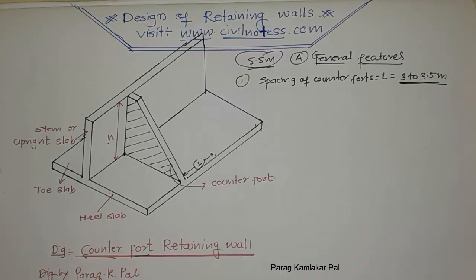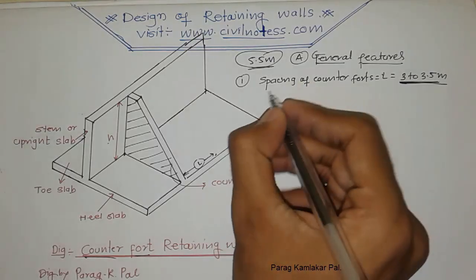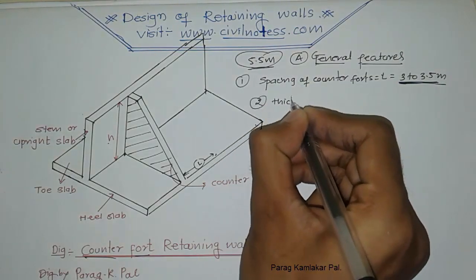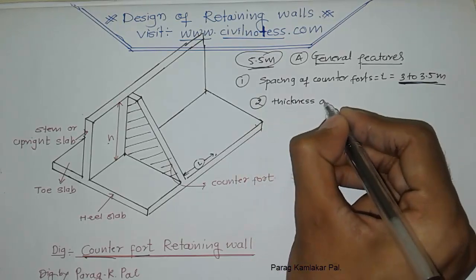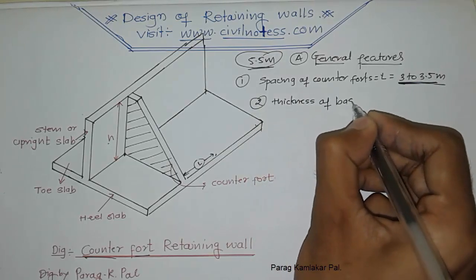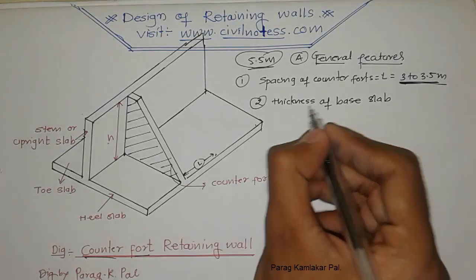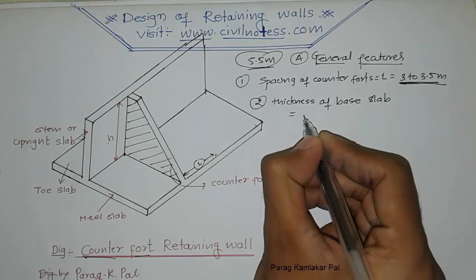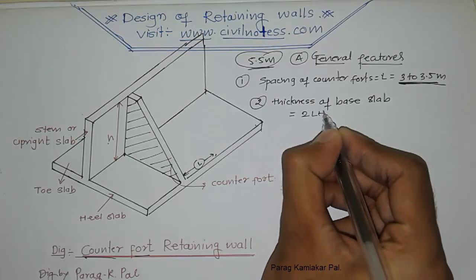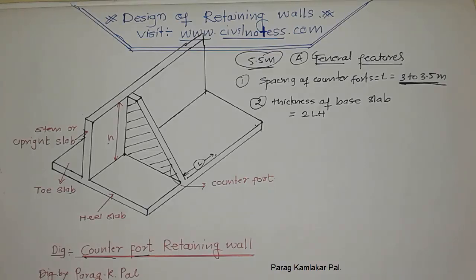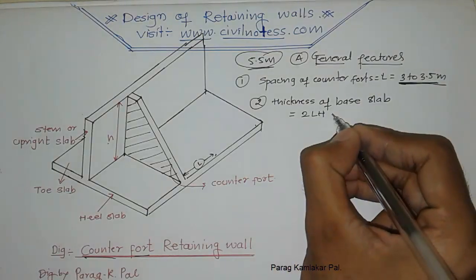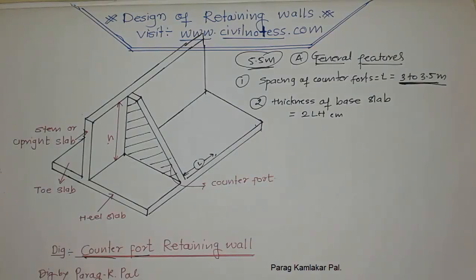Now, regarding the thickness of the base slab for the counterfort retaining wall: the thickness of the base slab is given by the formula 2√(L × H), where the result is in centimeters. Here H is the total height of the retaining wall.